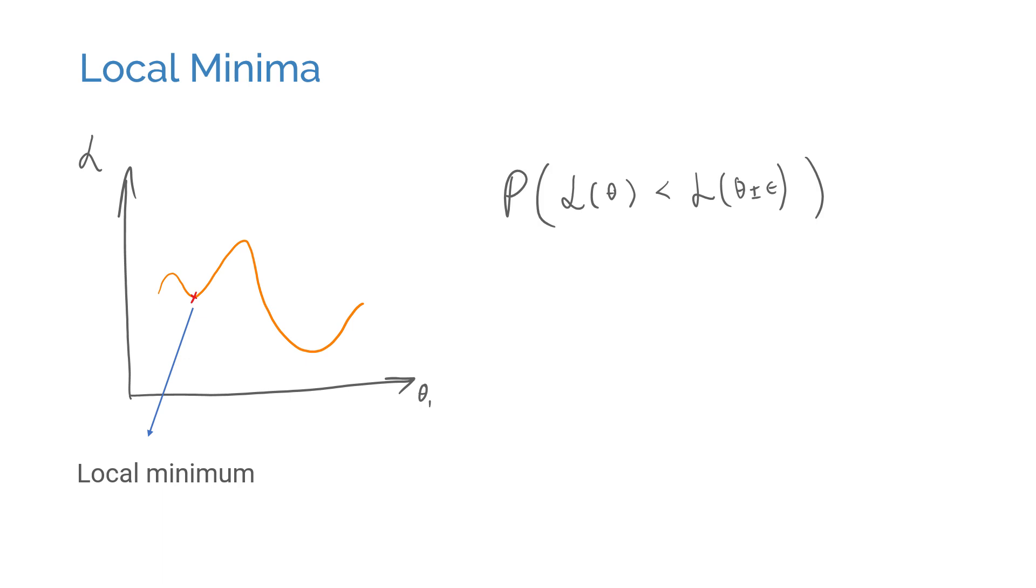But what if you have a million parameters, then for a point to be a local minimum, it needs to have a smaller value than all of its neighbors in all 1 million directions. And how likely is that? If it does happen, it's likely that it already has a very small value that can be considered an acceptable solution. In deep learning, we usually care about finding a good solution, rather than finding the global minimum.